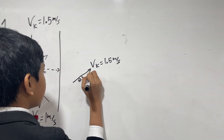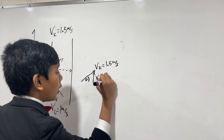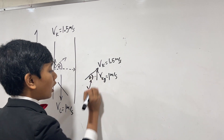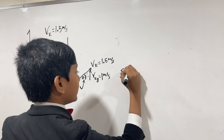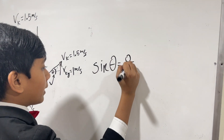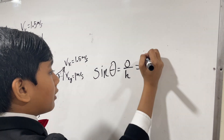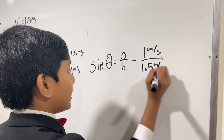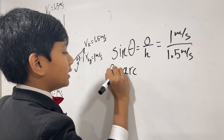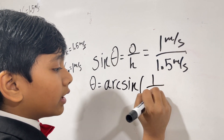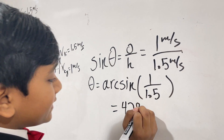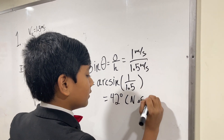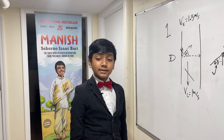That means we know that vky must be 1 meter per second, and now it's fairly easy to find this angle because we know the opposite side and we know the hypotenuse. So sine theta equals opposite over hypotenuse — opposite is vky which is 1 meter per second, over vk which is 1.5 meters per second. That means theta is simply equal to arc sine of 1 over 1.5, which equals 42 degrees north of east.